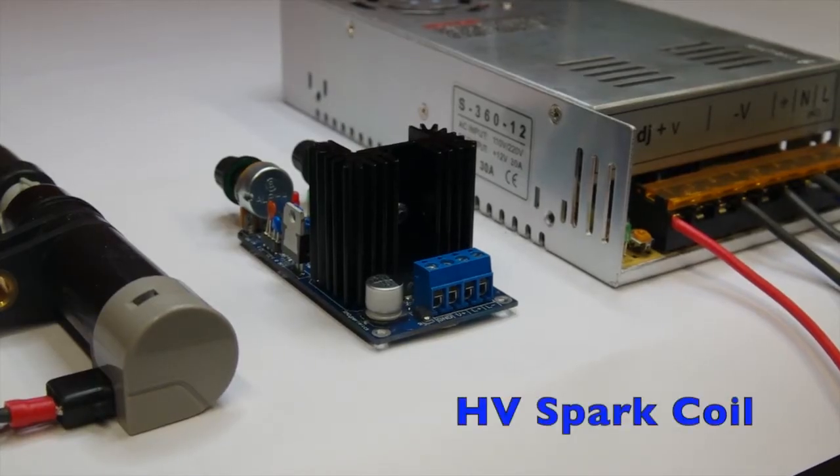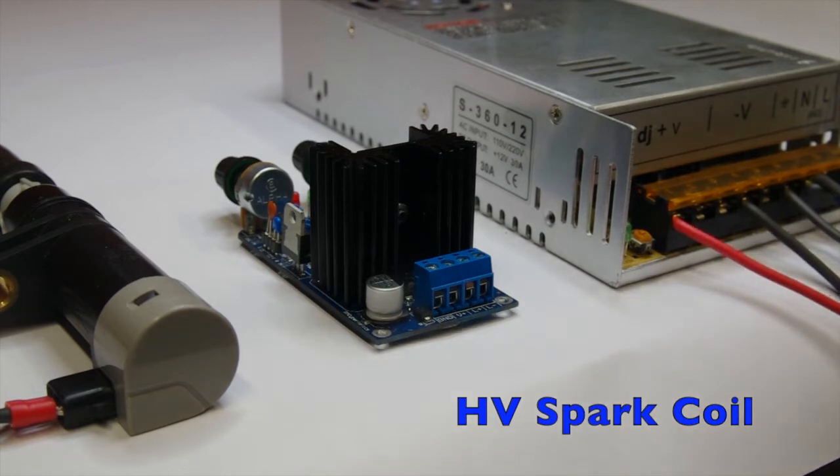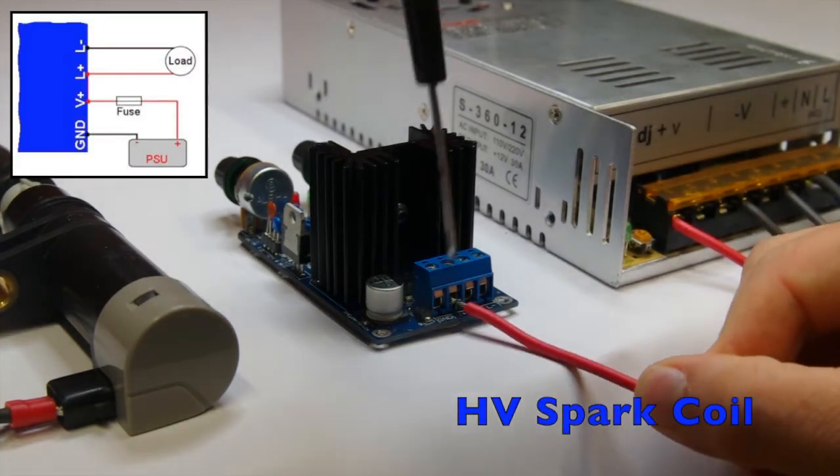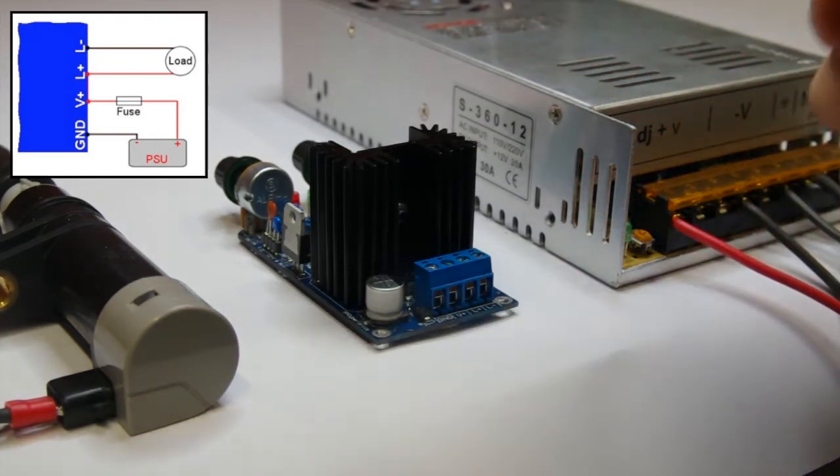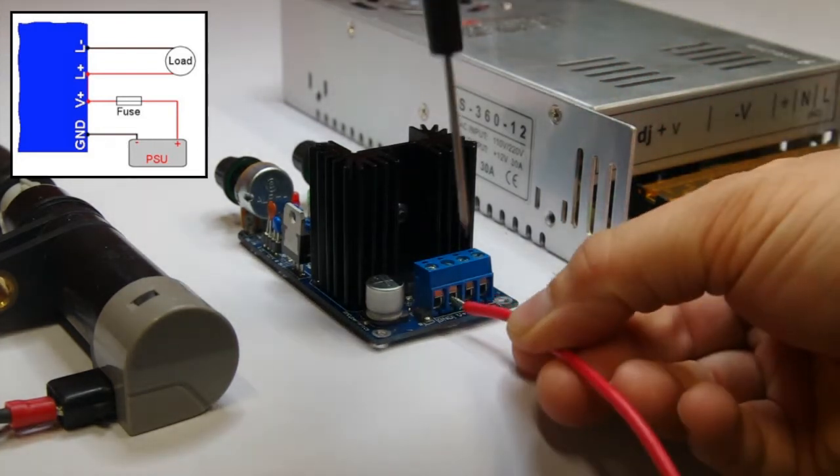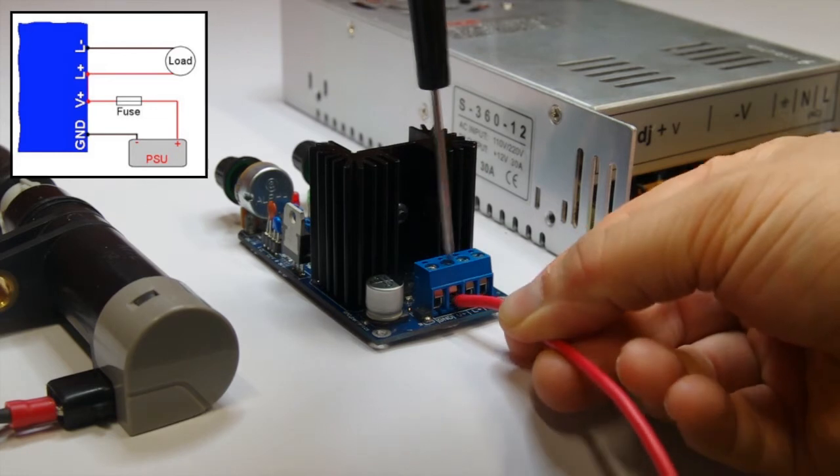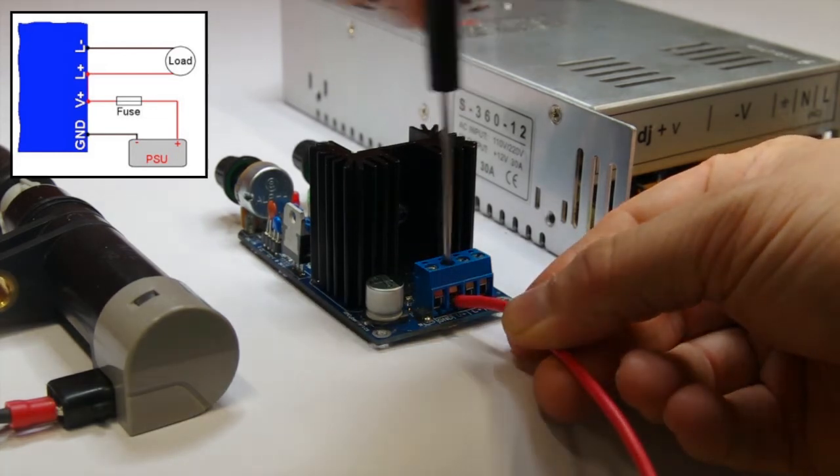So here you can see me setting up the high voltage spark coil with the OCXI version 2. Here I am connecting a power supply unit which is a 12 volt 30 amp supply to the OCXI. We do sell the power supply unit on our website.